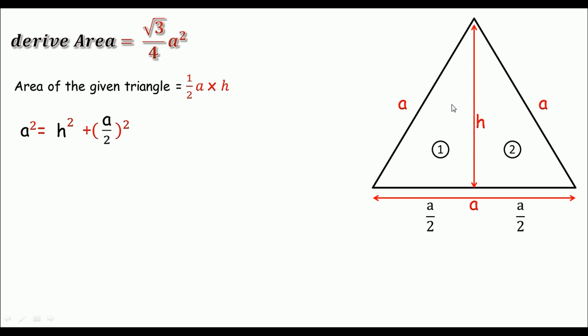Remember our approach is to determine the height of this triangle. So we turn a by 2 squared to another side of the equation. So we get a squared minus a by 2 squared equals h squared.